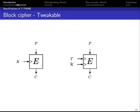From here, the idea of a tweakable block cipher comes to solve this problem. The tweakable block cipher takes an auxiliary input called the tweak. Using the tweak and the key, we can select the permutation over the message space. So by changing the tweak — which should be cheap — we get a different ciphertext using the same key.